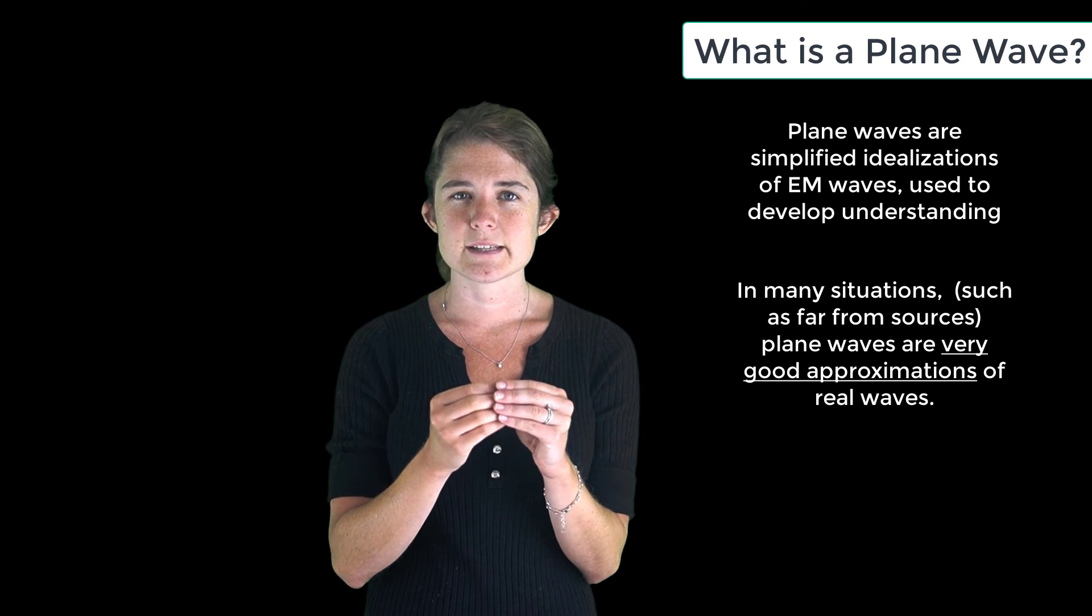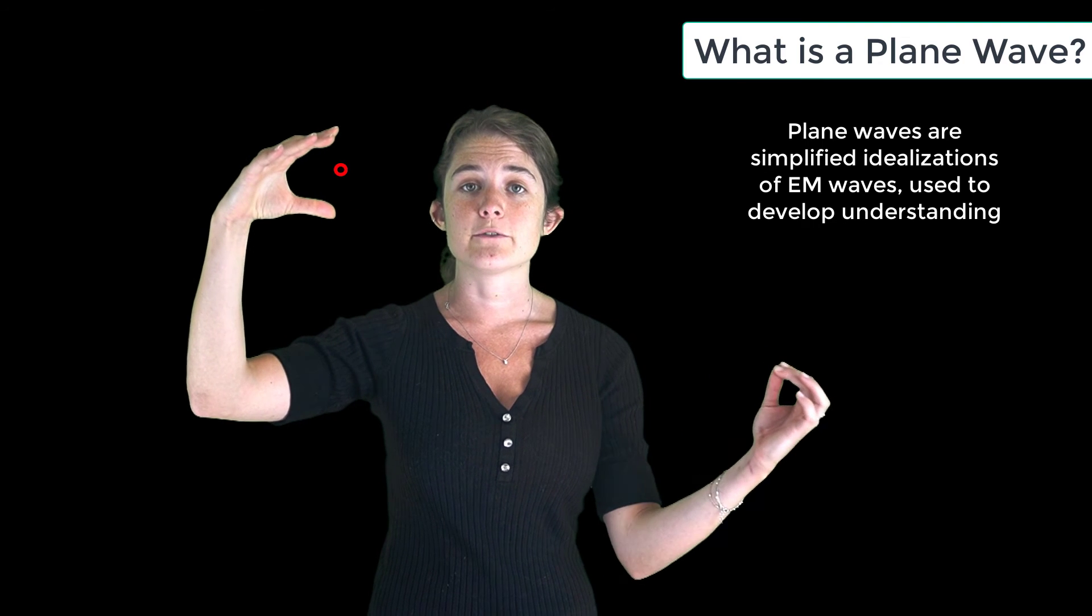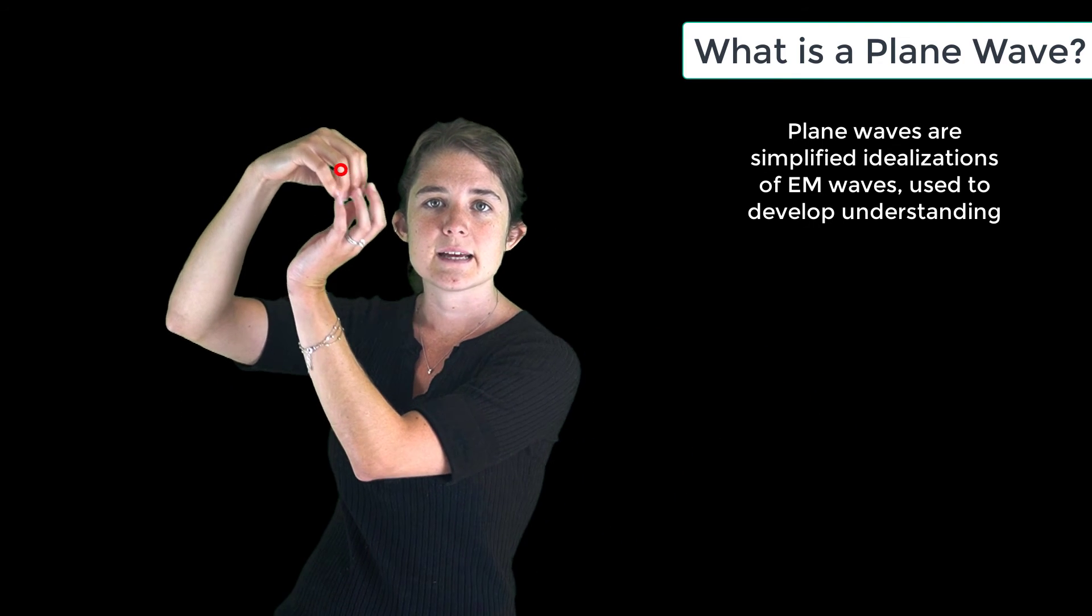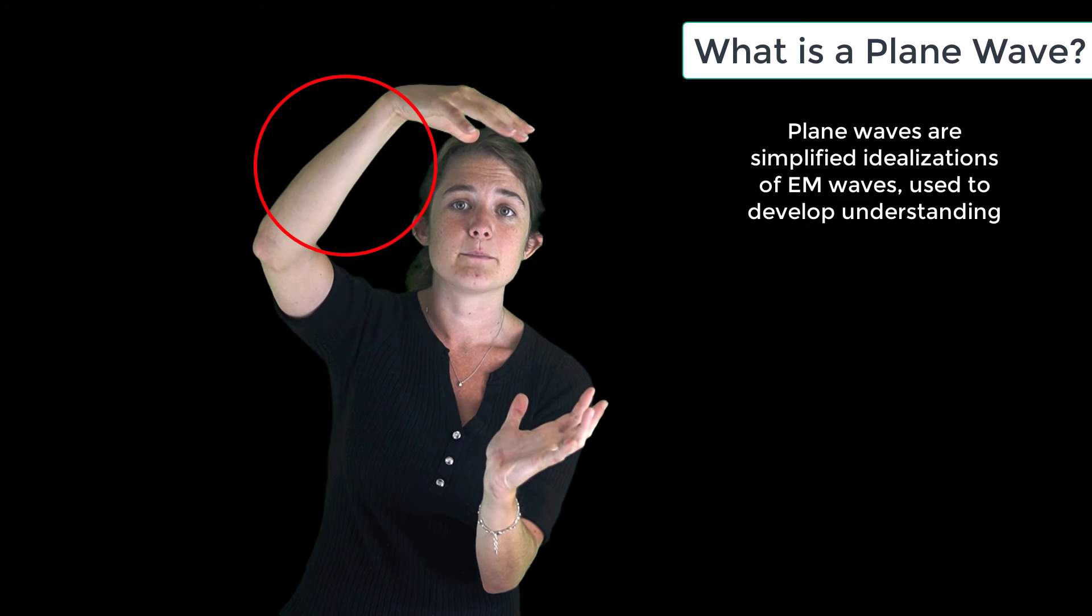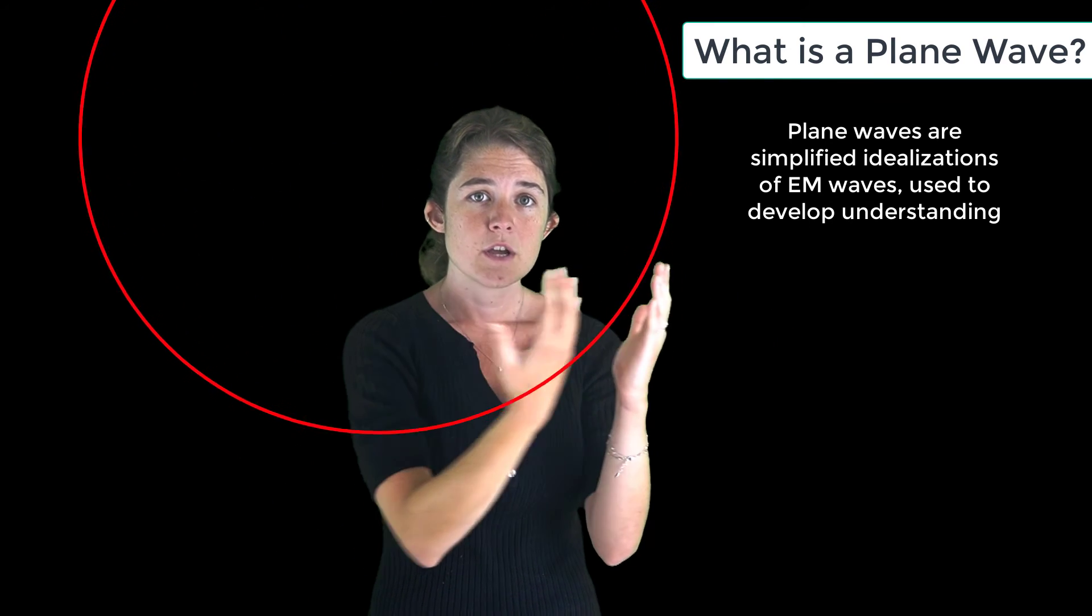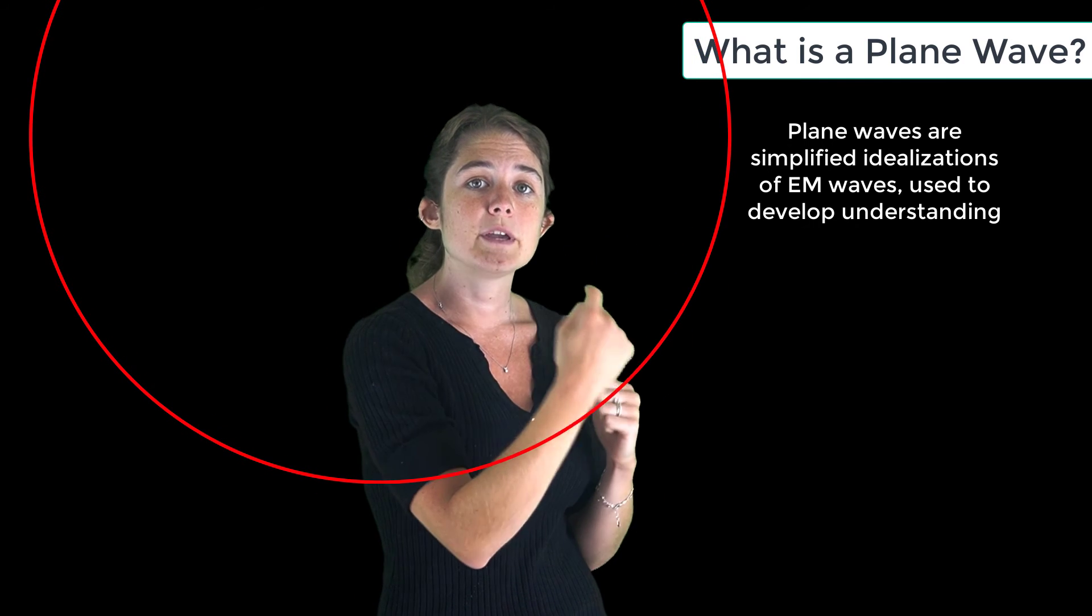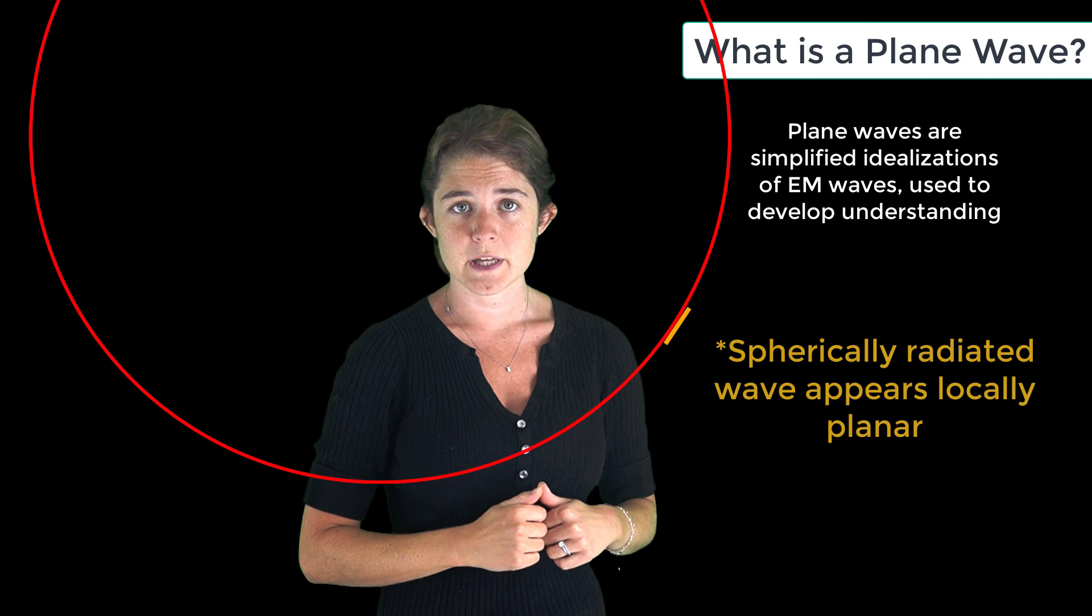For instance, consider a signal radiated outward from a point source and observed from far away. As it propagates, that signal will spread out over a bigger and bigger sphere. When an observer is very far from the source, the surface of the sphere, though technically not planar, will be humanly indistinguishable from a plane wave.